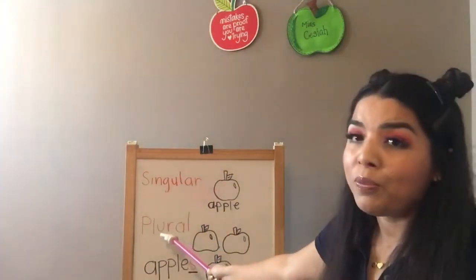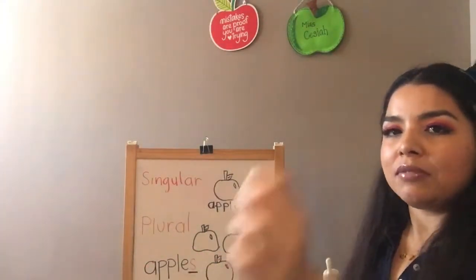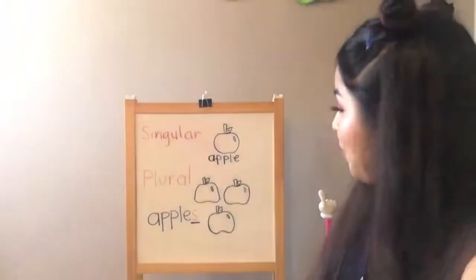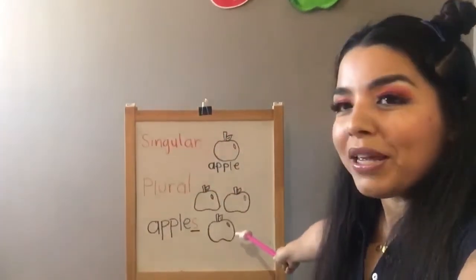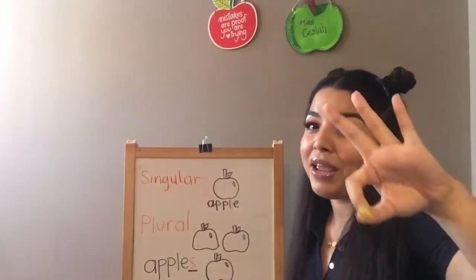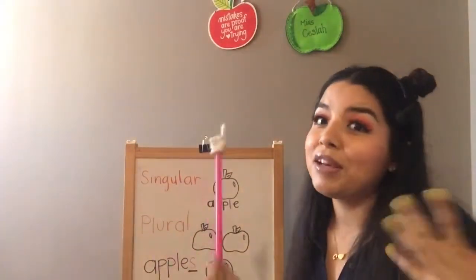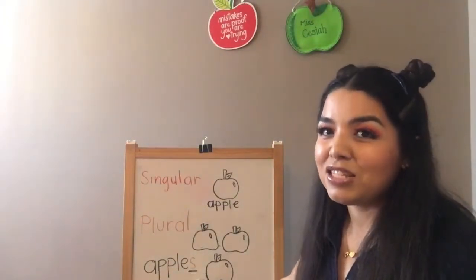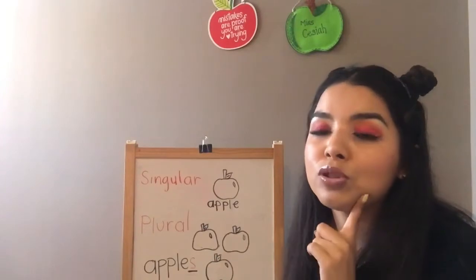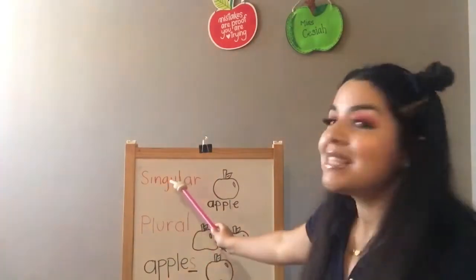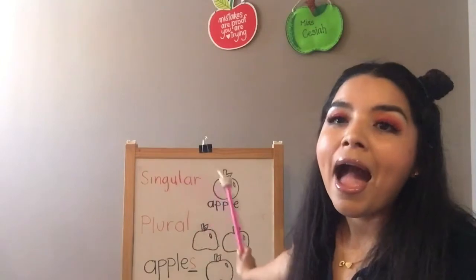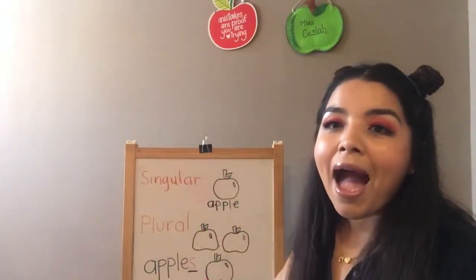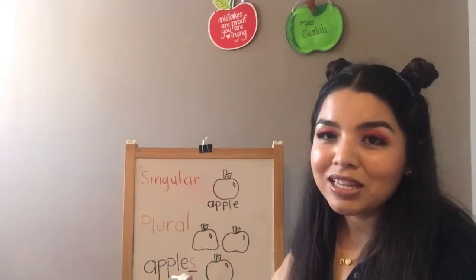Now let's go to the plural. How many apples do you see? Let's count: one, two, three. Excellent. So we have three apples. Because they're plural, they're going to end with the letter S. So it's going to be apples. Remember: singular — apple. Plural — apples. Great job.